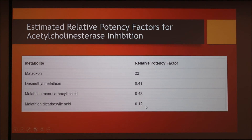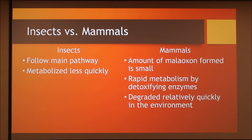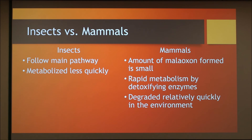So how does all this explain the selective toxicity? The main difference is that the metabolism between insects and mammals differs. Mammals form less malaoxon and have detoxifying enzymes which rapidly degrade the malathion — think of the monocarboxylic acid and the dicarboxylic acid pathways. In contrast, insects must rely on the main pathway of degradation, and therefore produce a greater quantity of malaoxon. For these metabolic reasons, malathion is much more toxic to insects.